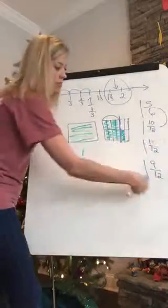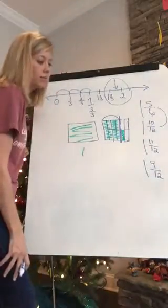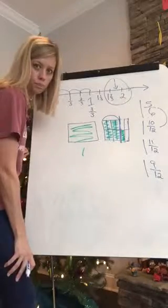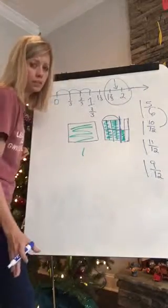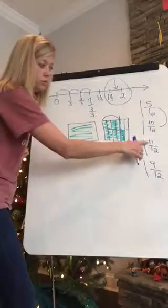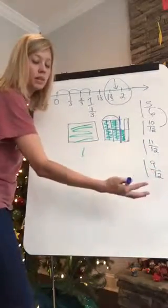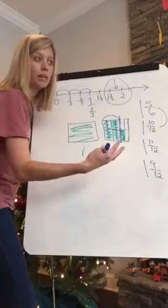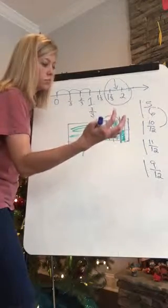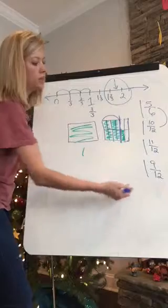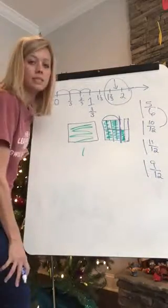We could also simplify on one of these. Can we simplify eleven-twelfths or nine-twelfths? I hope you said nine-twelfths, because eleven is a prime number, and eleven doesn't go into twelve, so I have to find one that has common factors.